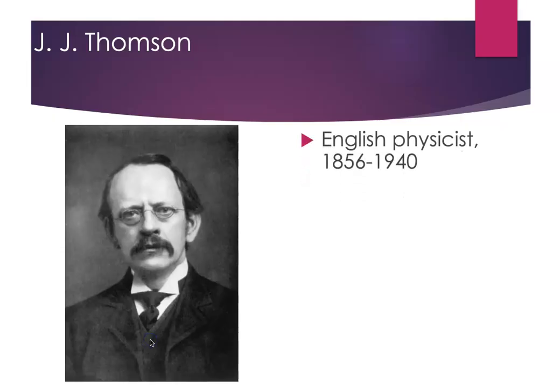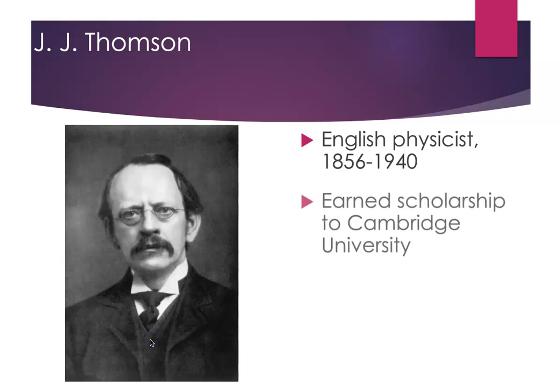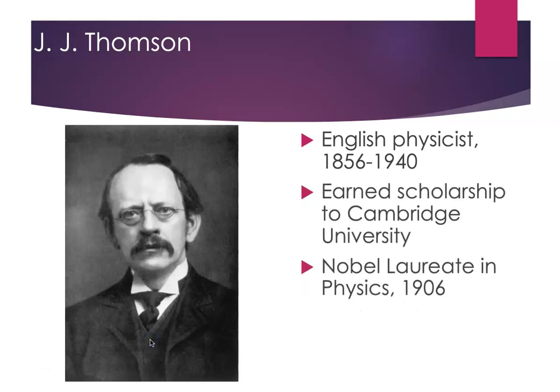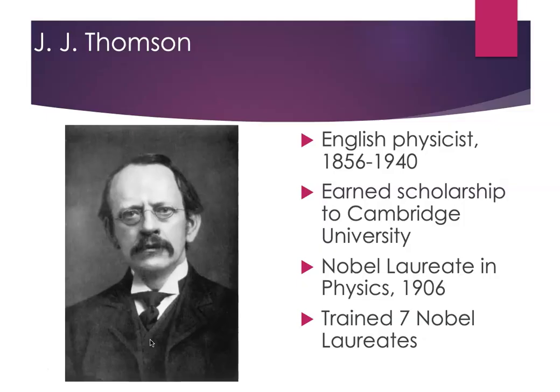J.J. Thomson was an English physicist who studied at Cambridge. He went there on scholarship and eventually won the Nobel Prize in physics in 1906. He was exceptionally gifted at designing apparatus and equipment for new experiments. Notably, seven of his students themselves went on to win Nobel Prizes — quite the lab.